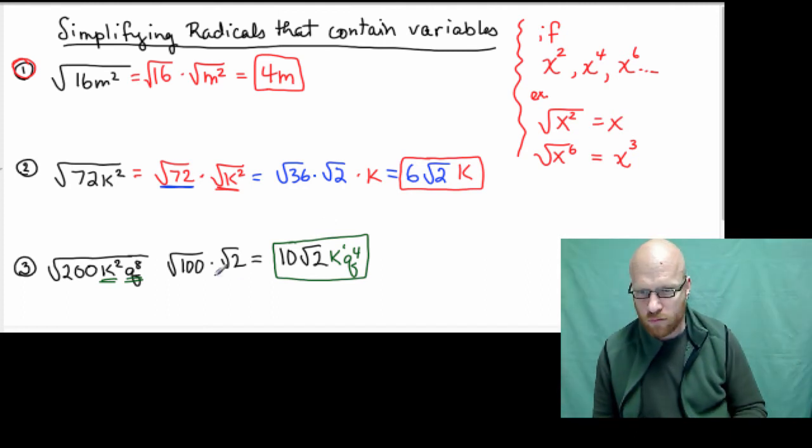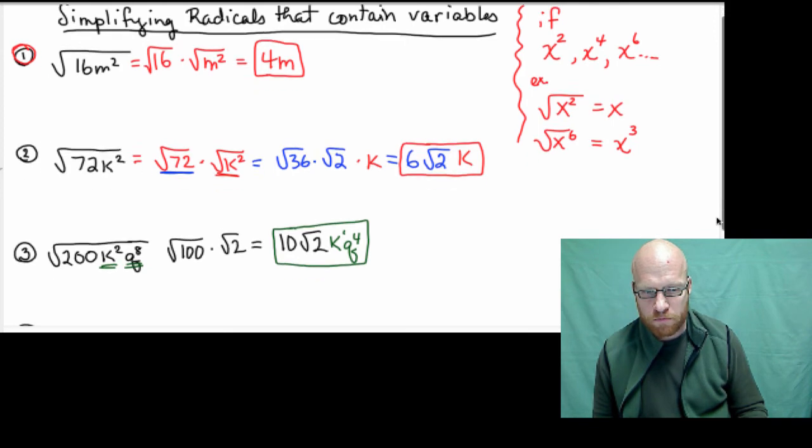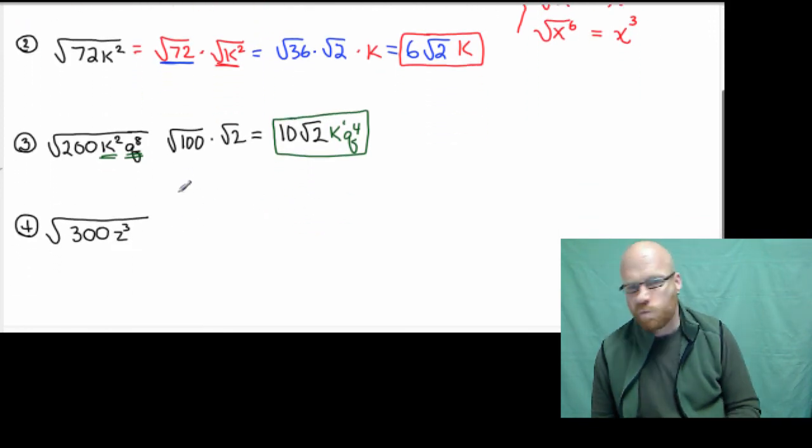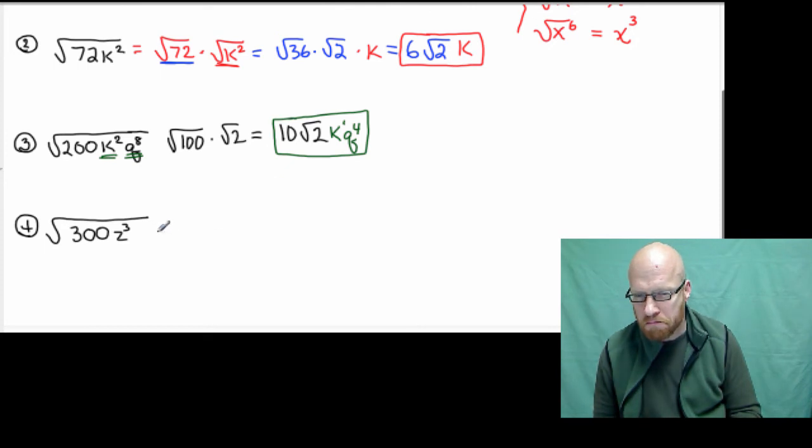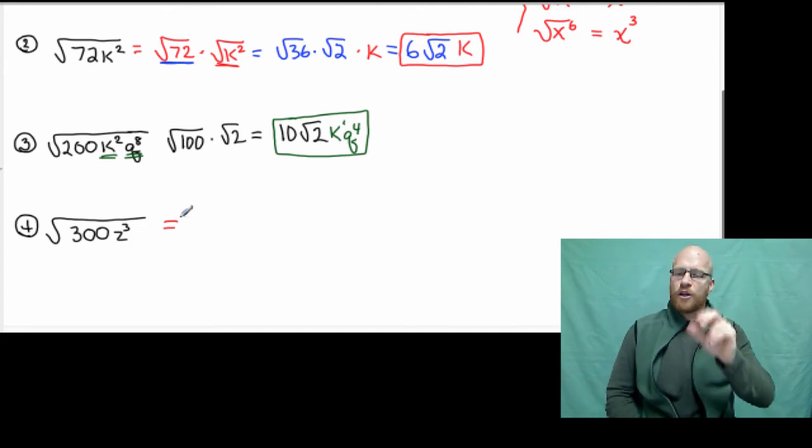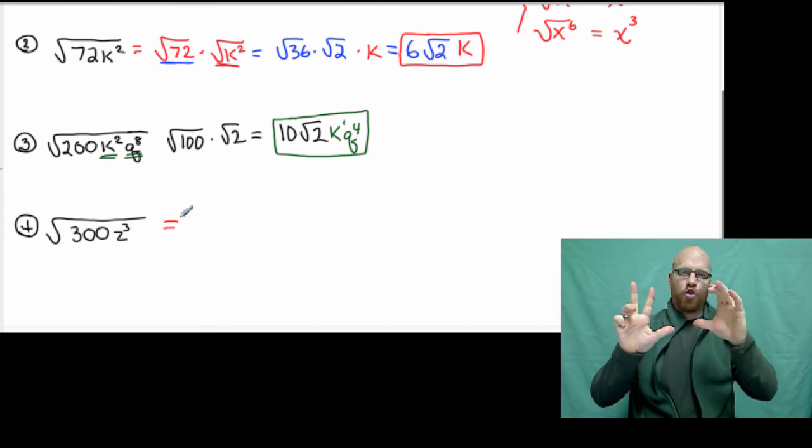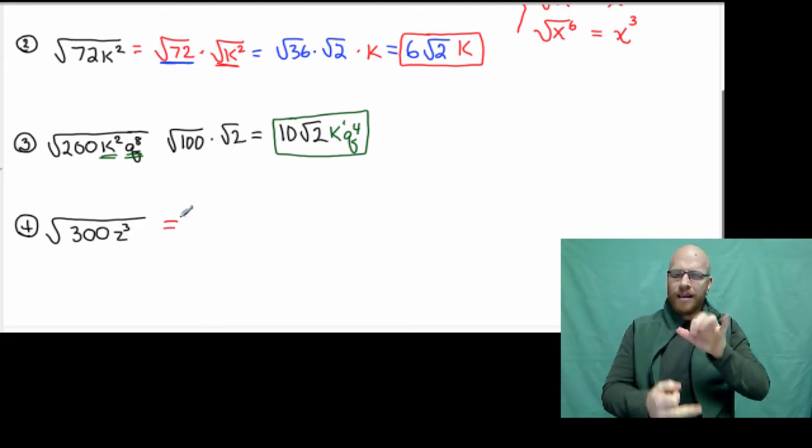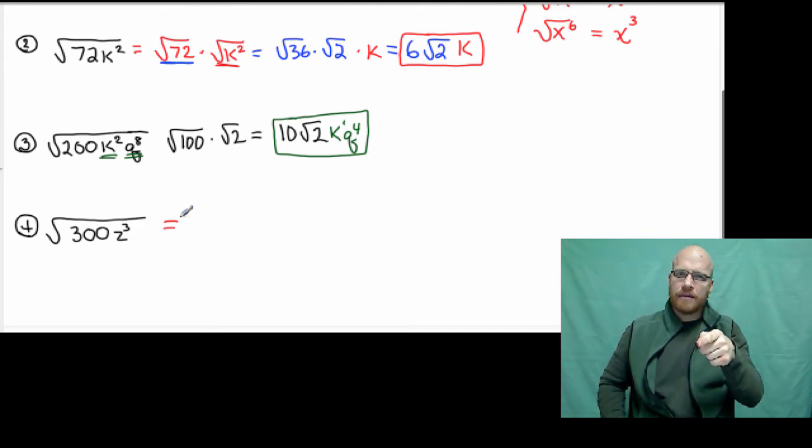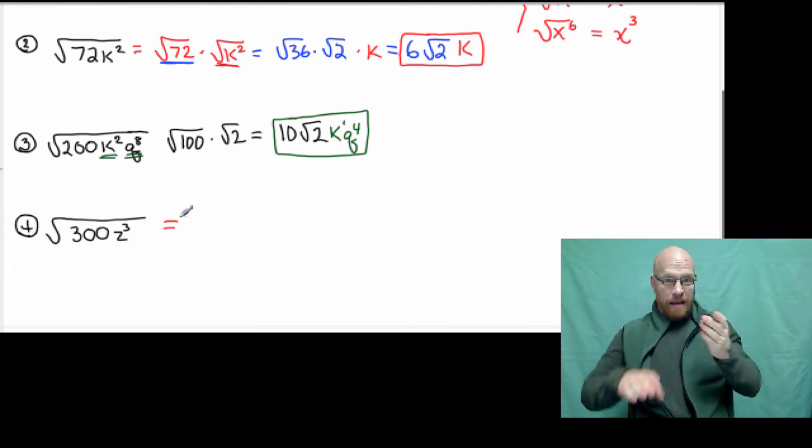So now our last example. Now we have 300, and by previous examples we can say that 3 times 100 equals 300. That's done. Now we have z cubed. Now z to the cubed power, 3 to the third power, is not even. So there's no way to take the square root of z cubed.